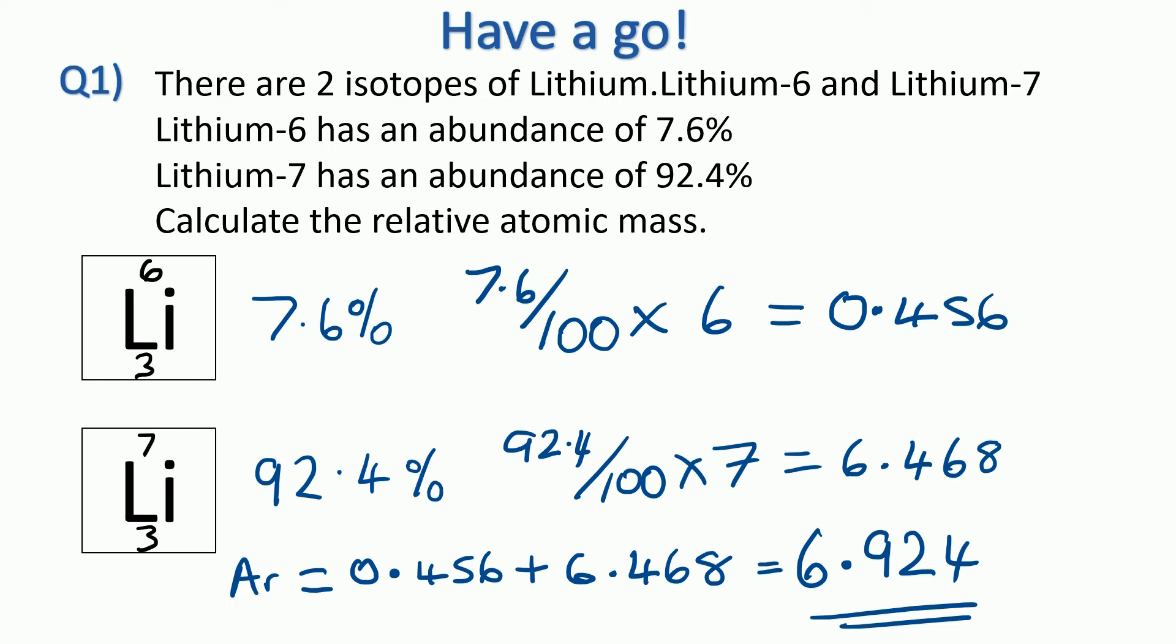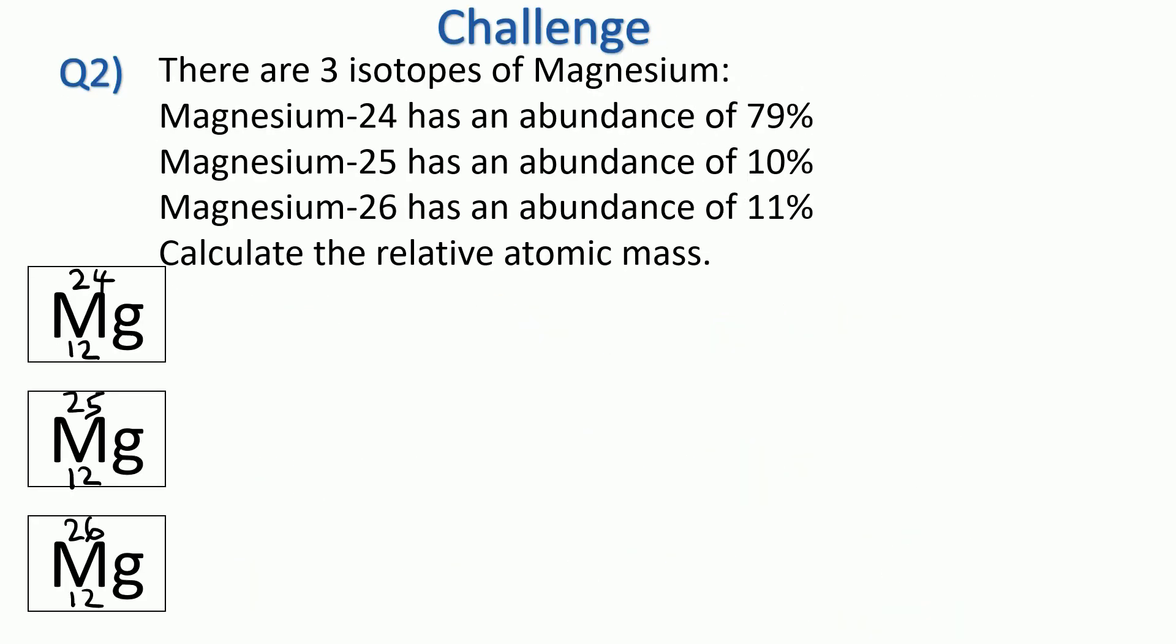I've called this last question the challenge question because there's three isotopes of magnesium, but in actual fact you do it exactly the same. You work it out for each one and then add the three numbers together this time. So once again, pause the video, then check back in to see if you've got the answer correct.